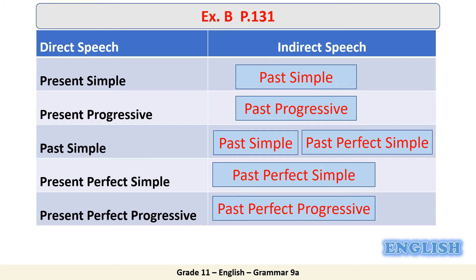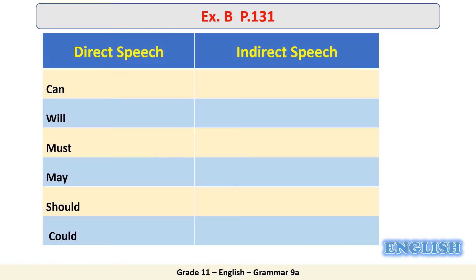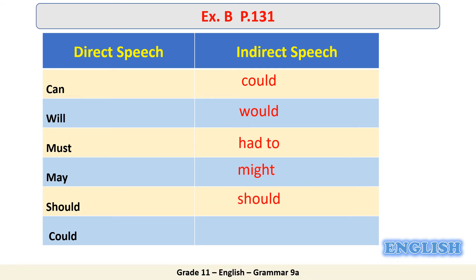Let's look quickly at the changes in the modal verbs between direct speech and indirect speech. 'Can' becomes 'could.' 'Will' becomes 'would.' 'Must' becomes 'had to.' 'May' becomes 'might.' 'Should' remains 'should,' and 'could' remains 'could.'